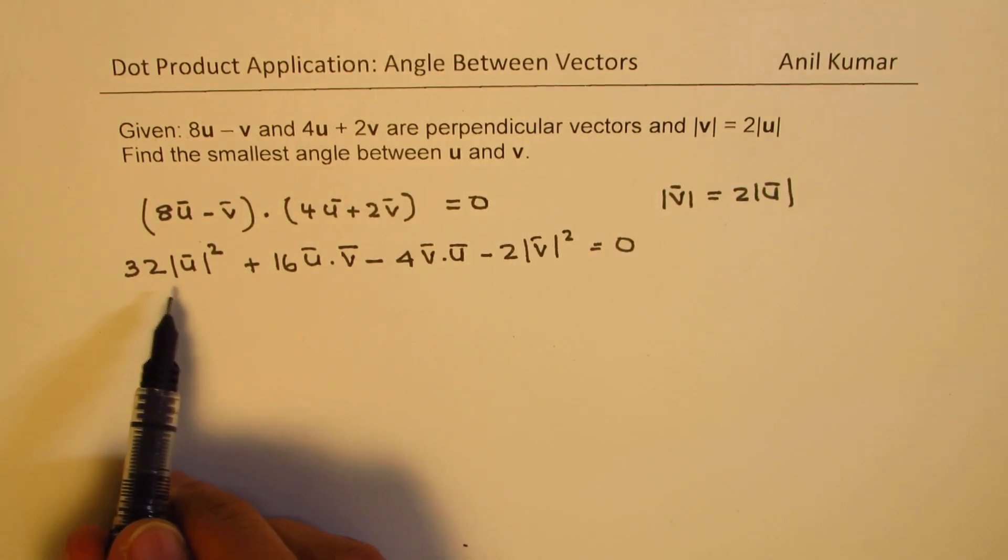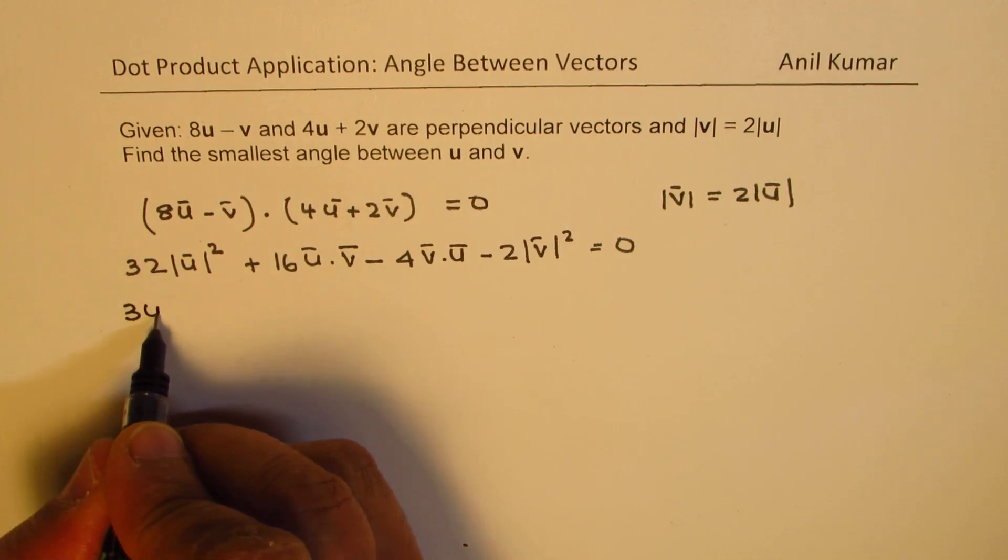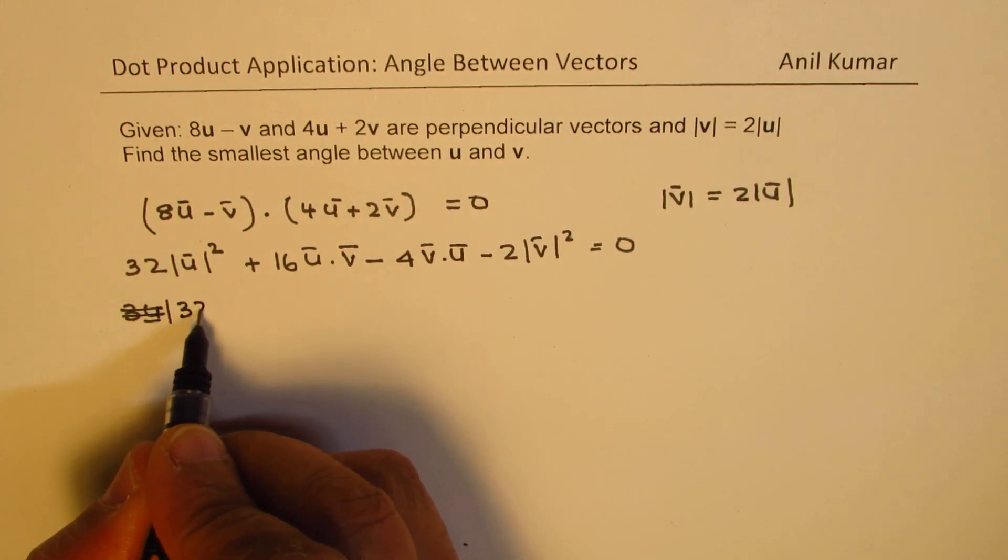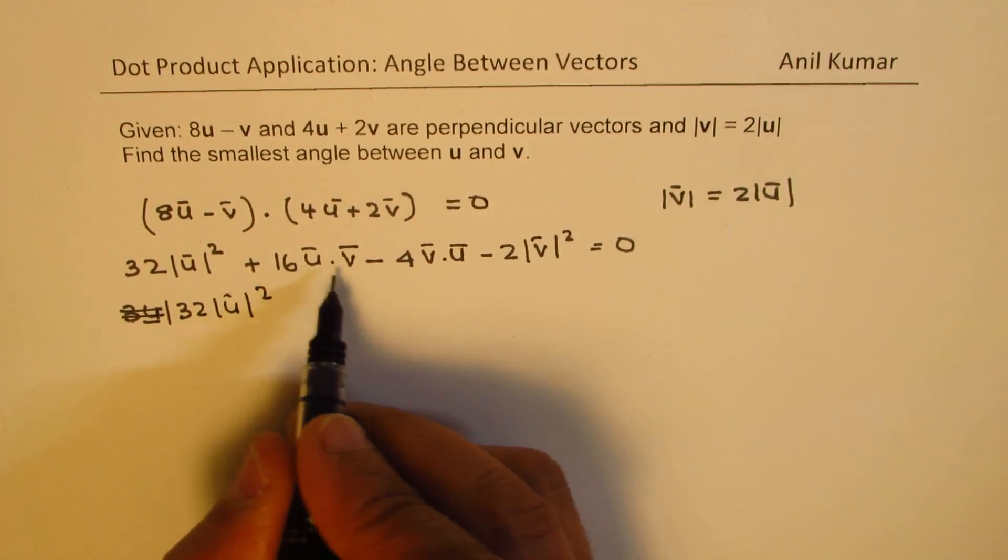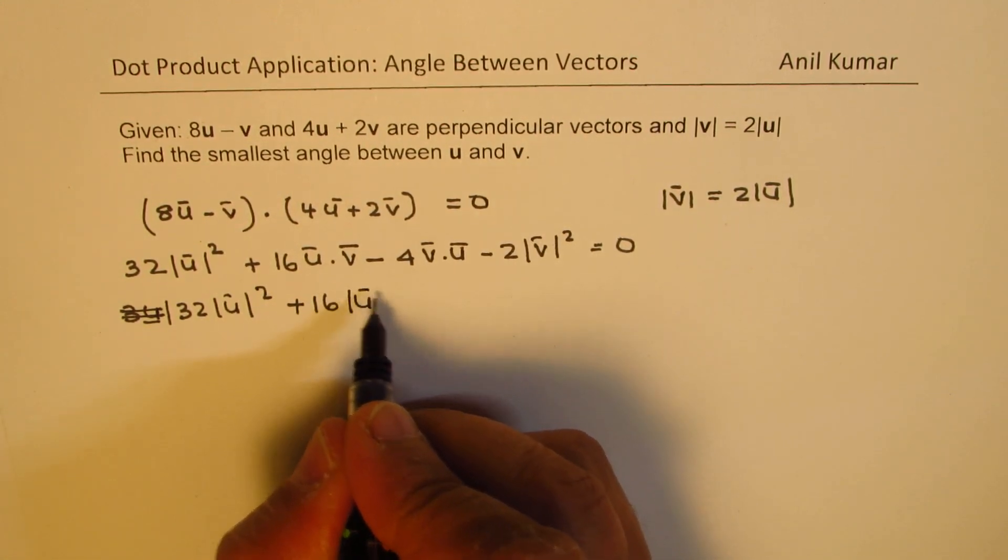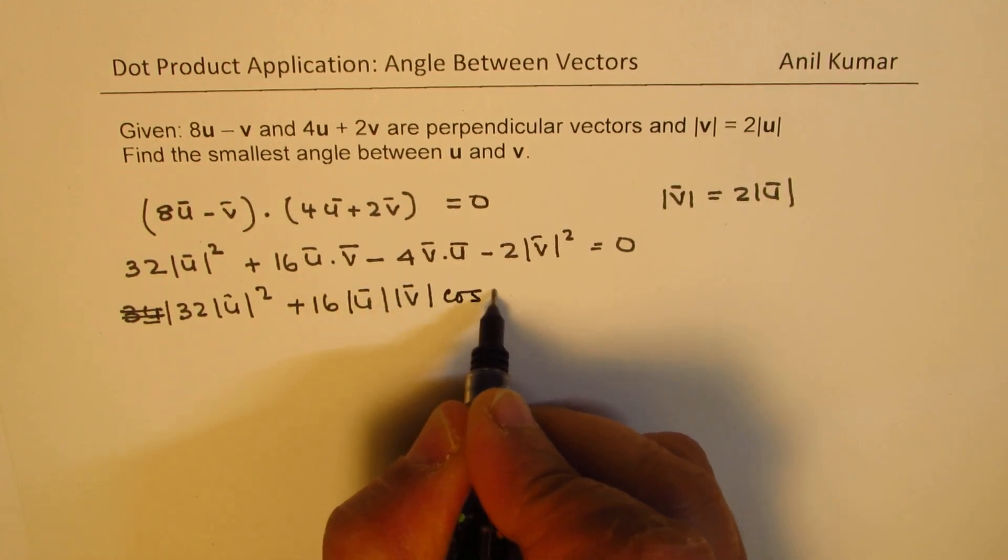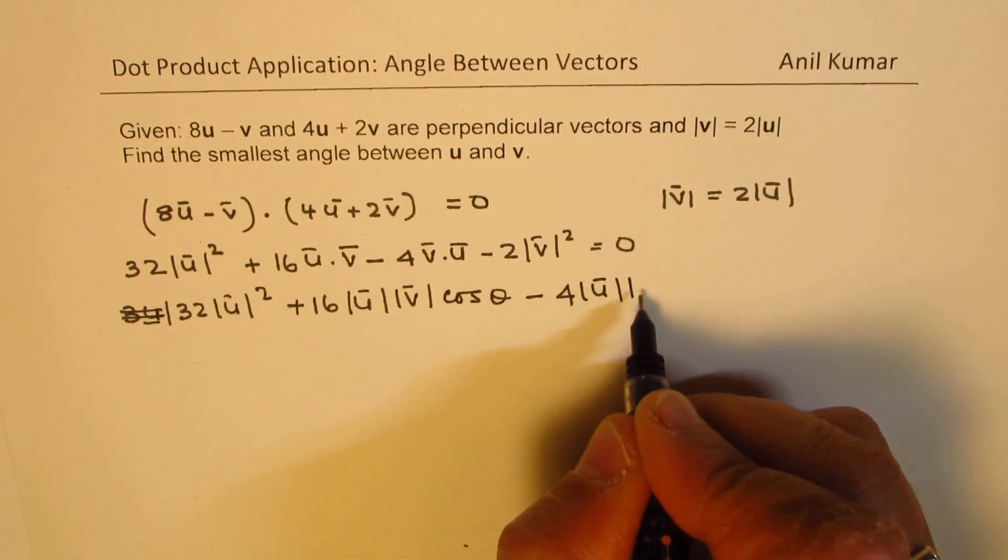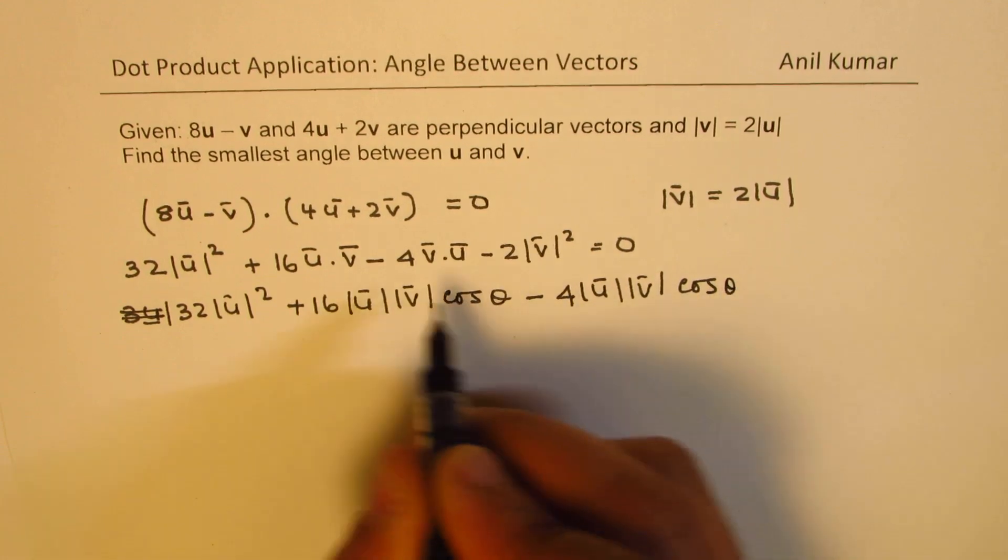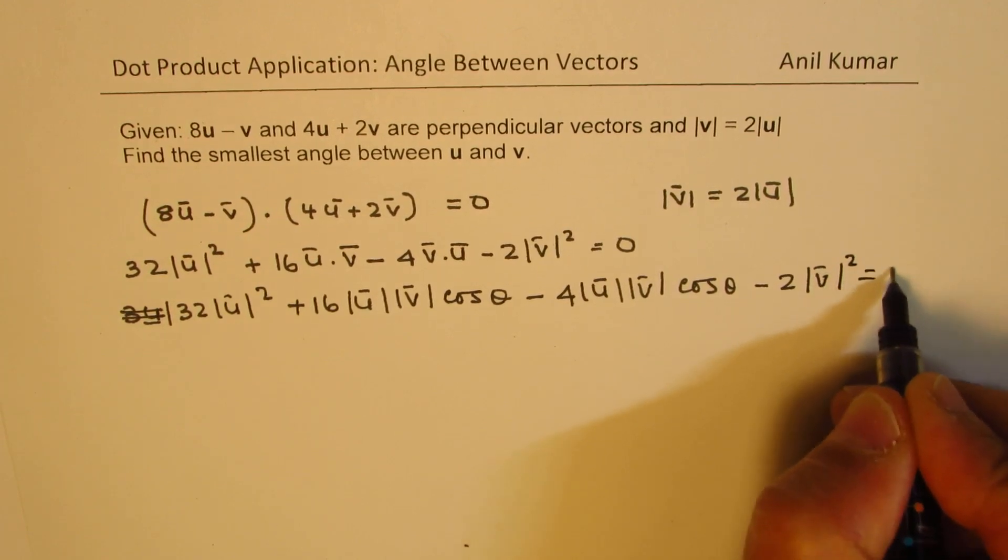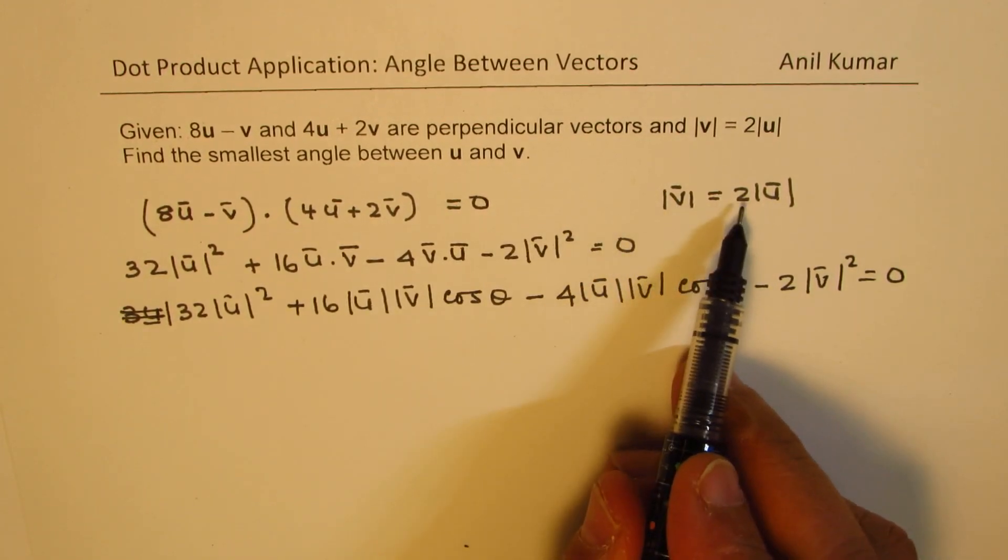So we have 32 magnitude of u squared. Now here we could write this as 16 times the magnitude of u times the magnitude of v times cos theta. And this is minus 4 times the magnitude of u times the magnitude of v times cos theta, and we have minus 2 magnitude of v squared equals zero, where theta is the angle between these two.